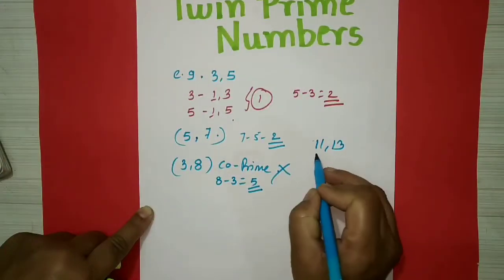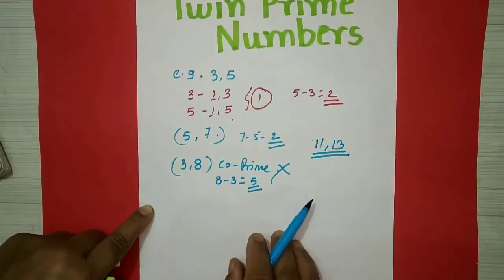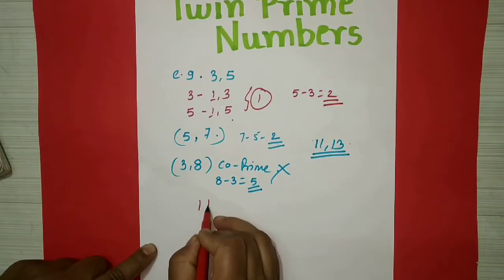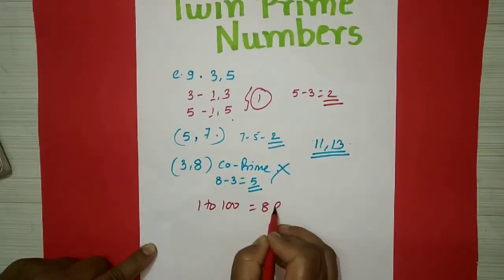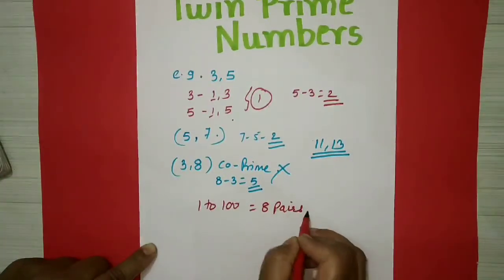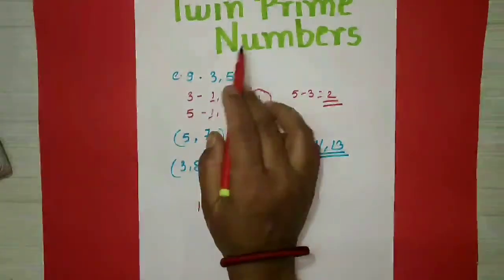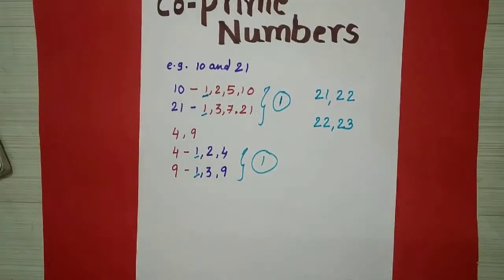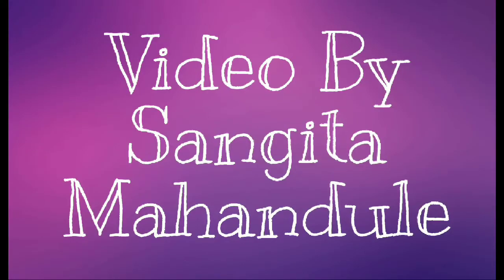11 and 13 are also twin prime numbers. There are 8 pairs of twin prime numbers from 1 to 100. So these are co-prime numbers, and these are twin prime numbers. You can see all the twin prime number pairs from 1 to 100 here.